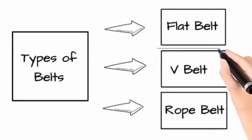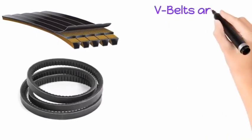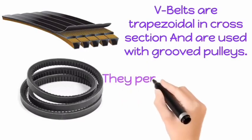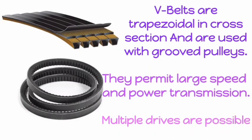Now we will see V-Belt. What is a V-Belt? V-Belt are trapezoidal in cross section and are used with grooved pulleys. They permit large speed and high power transmission. Multiple drives are possible.